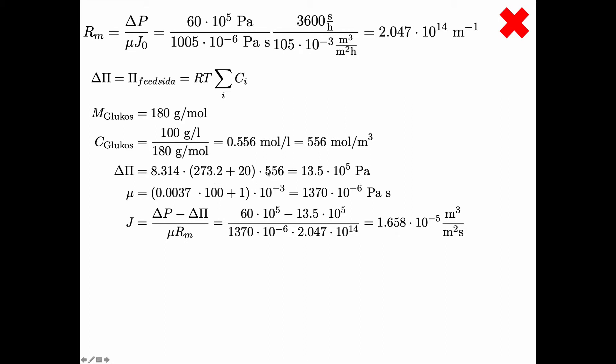Delta π then is the gas constant 8.314 times the temperature in Kelvin since this has to be SI units and you get 13.5·10⁵ pascal. The viscosity, we use the equation we got, 0.037 times 100 and then plus the 1 there and you get 1370·10⁻⁶ pascal second.